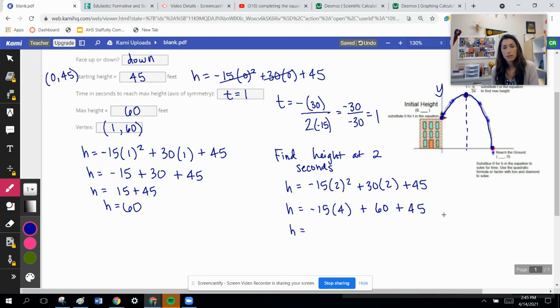We'll keep simplifying this. You can put this in a calculator. Negative 15 times four is negative 60 plus 60 plus 45. So that's going to be zero plus 45. So the height is 45. So we'll actually have a point at two comma 45 as well. So we would have at least three points to graph on this parabola.